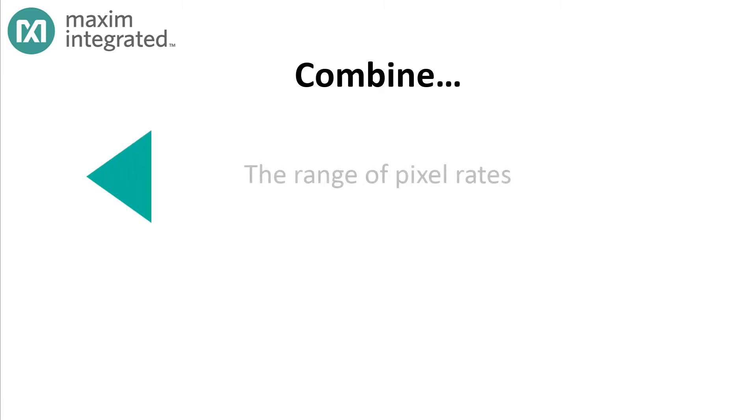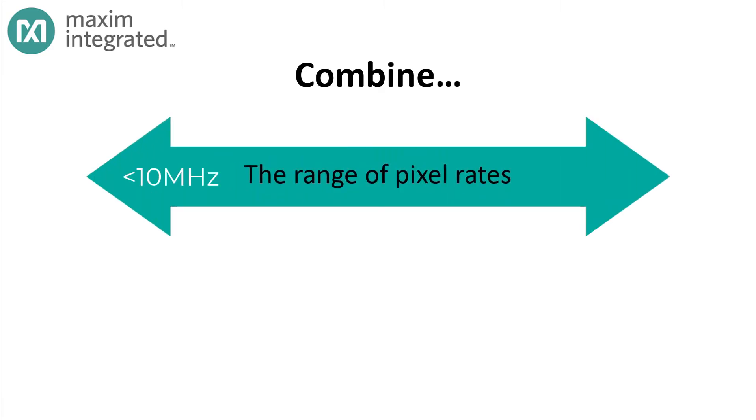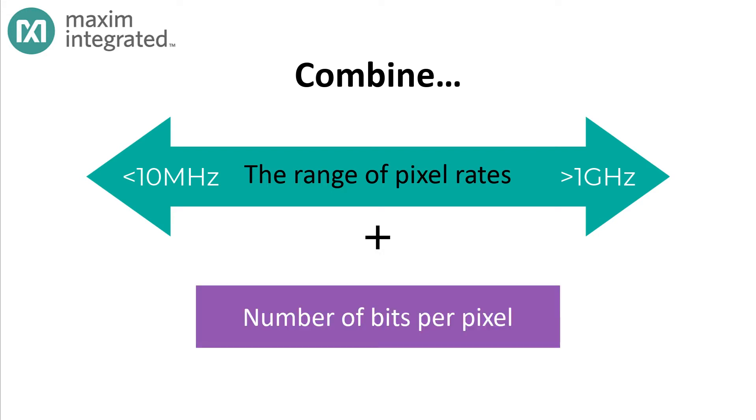The bottom line is this. You can see pixel frame rates from under 10MHz to north of 1 GHz. And combine that with the variability of the number of bits per pixel, and you can see serial bit rates that could vary wildly.